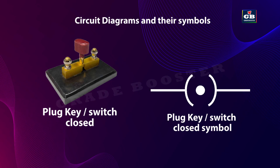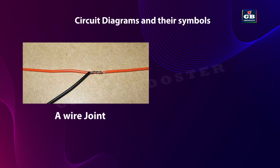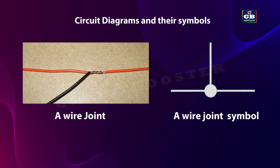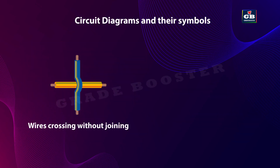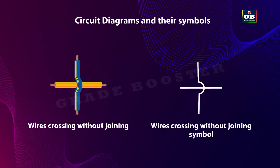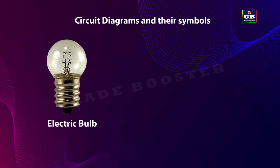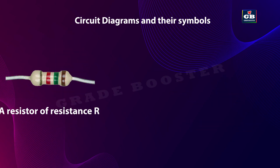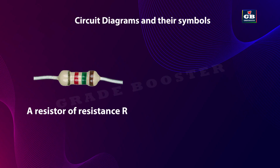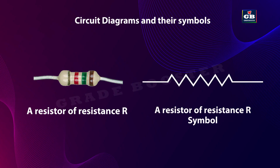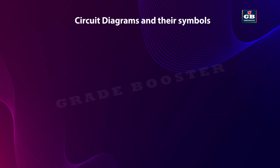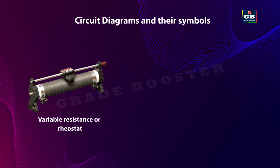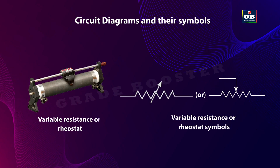This is a wire joint and this is the symbol of it. Wires crossing without joining and this is its symbol. Electric bulb and this is its symbol. A resistor of resistance R and this is the symbol of resistance. Variable resistance or rheostat and this is the symbol of it.